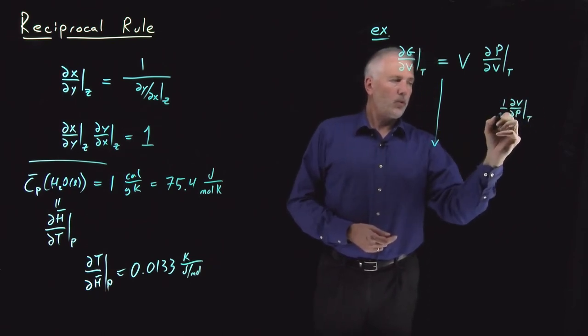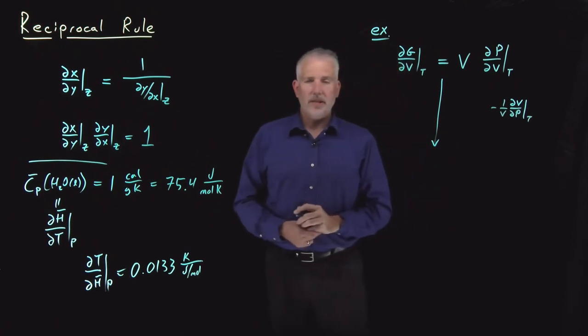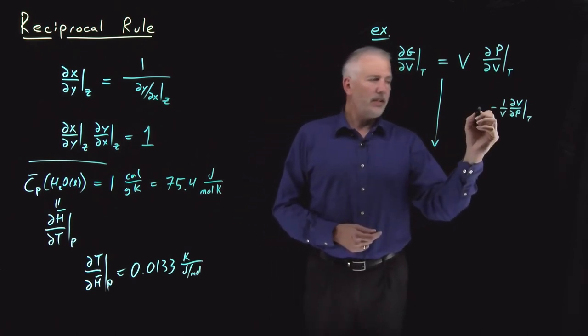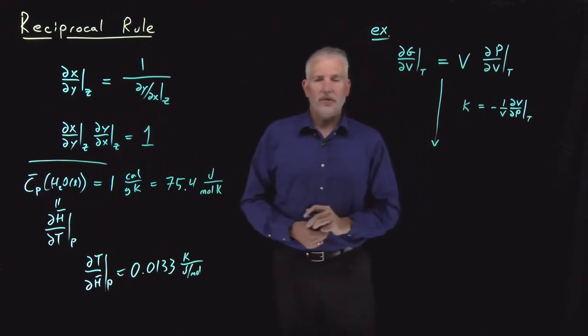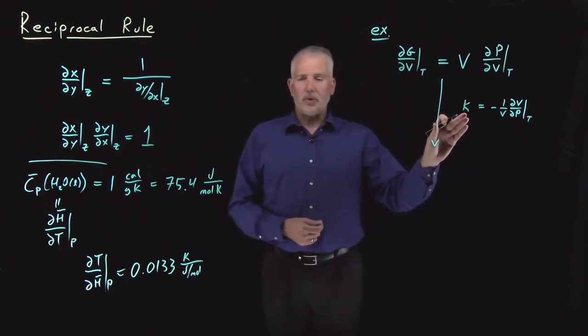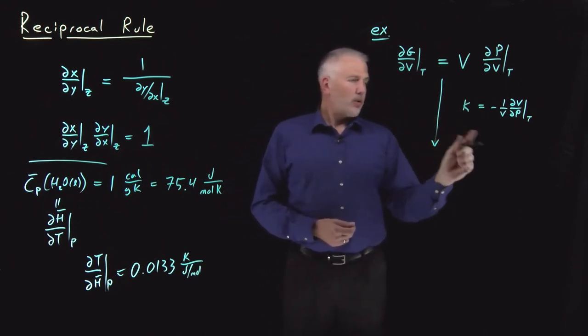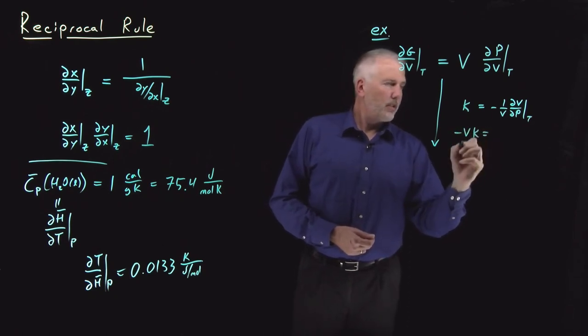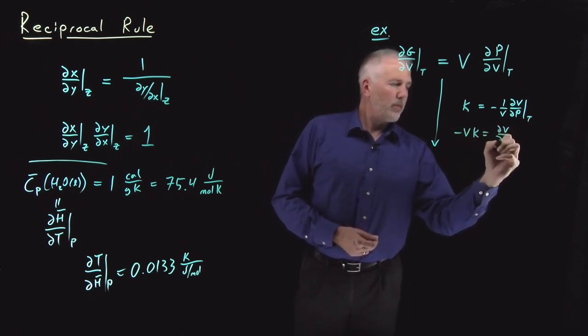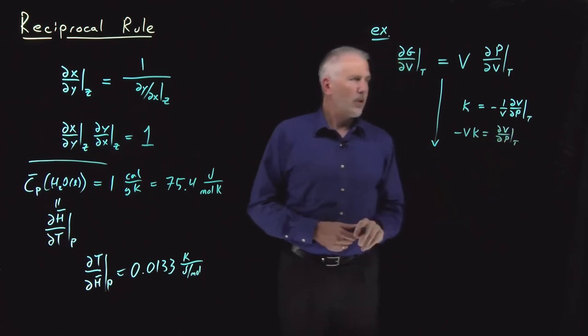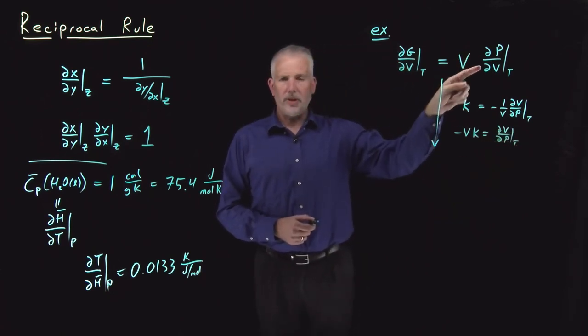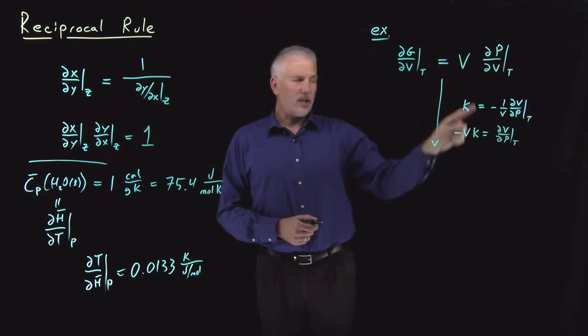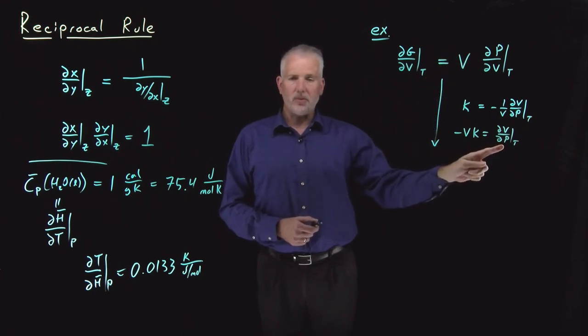...in particular if I take 1 over v dv dp at constant t with a negative sign, that's the thing that we've called kappa, the isothermal compressibility. If I just rearrange that equation a little bit, minus v times kappa is equal to dv dp at constant t. This derivative looks a little bit familiar, it's just the reciprocal upside down of something that we have a little bit of experience with.